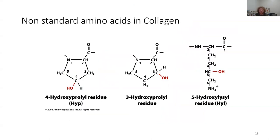Here are examples of the non-standard amino acids in collagen. You've got your 4-hydroxyproline residue — here's the N-terminus, alpha carbon, and C-terminus of the amino acid backbone, numbering carbons one through five. Then 3-hydroxyproline, with the hydroxy group on carbon number three. And 5-hydroxylysine, with a hydroxy group on carbon number five — which is the delta carbon, alpha, beta, gamma, delta.